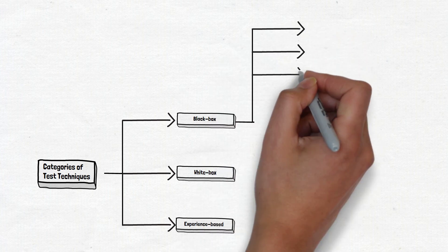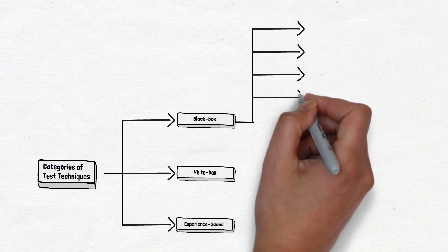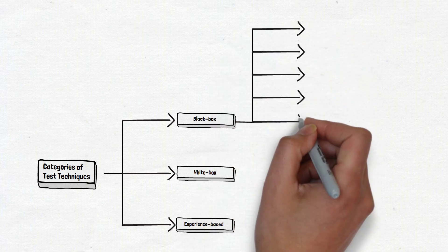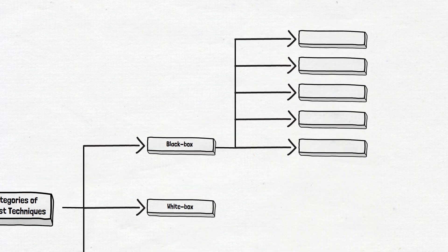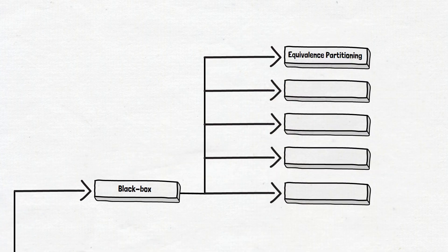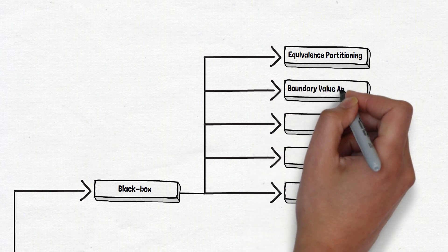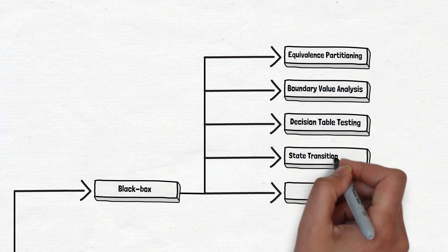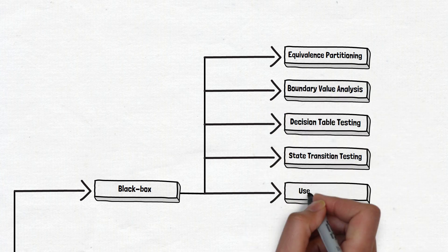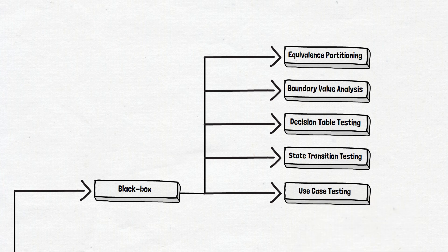The biggest category is black box. It includes five test techniques: equivalence partitioning, boundary value analysis, decision table testing, state transition testing, and use case testing. We won't explain those now — each deserves a separate video.